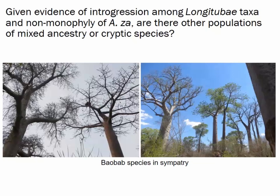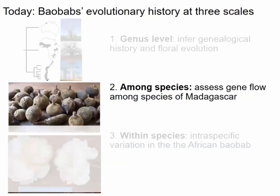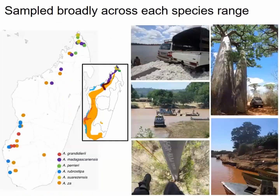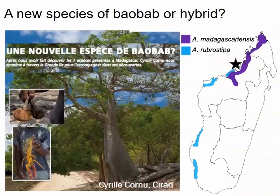To summarize Part 1: we have evidence for introgression among Longitubae taxa, and suggestions of cryptic species in Madagascar with za samples not being each other's closest relatives. This raises the question: are there other populations with mixed ancestry or undescribed species on the landscape? That leads to Part 2, where we explore geographic patterns of variation requiring broad sampling across each species' range.